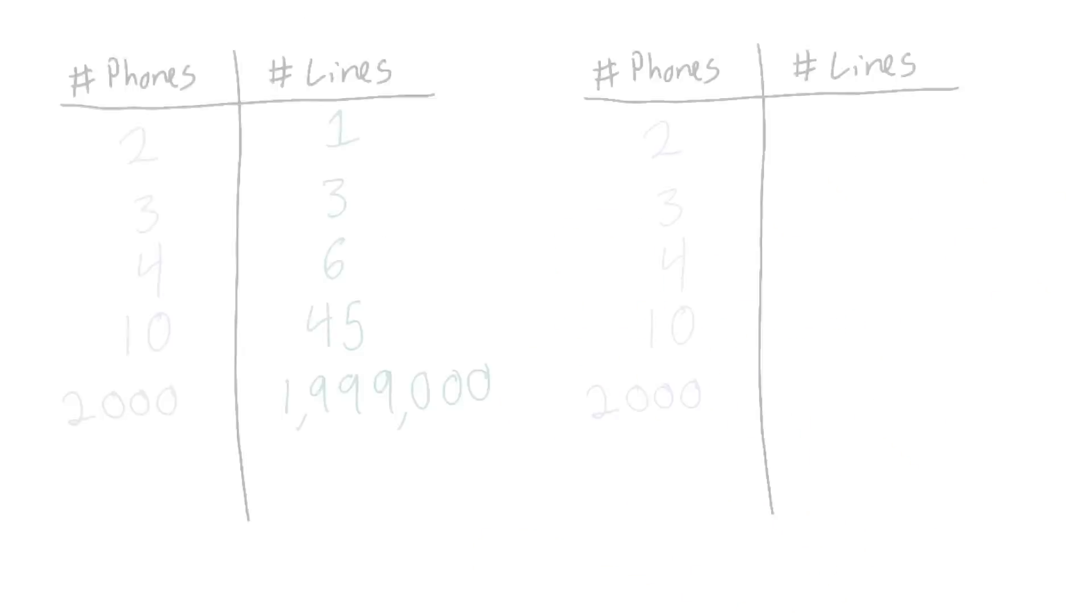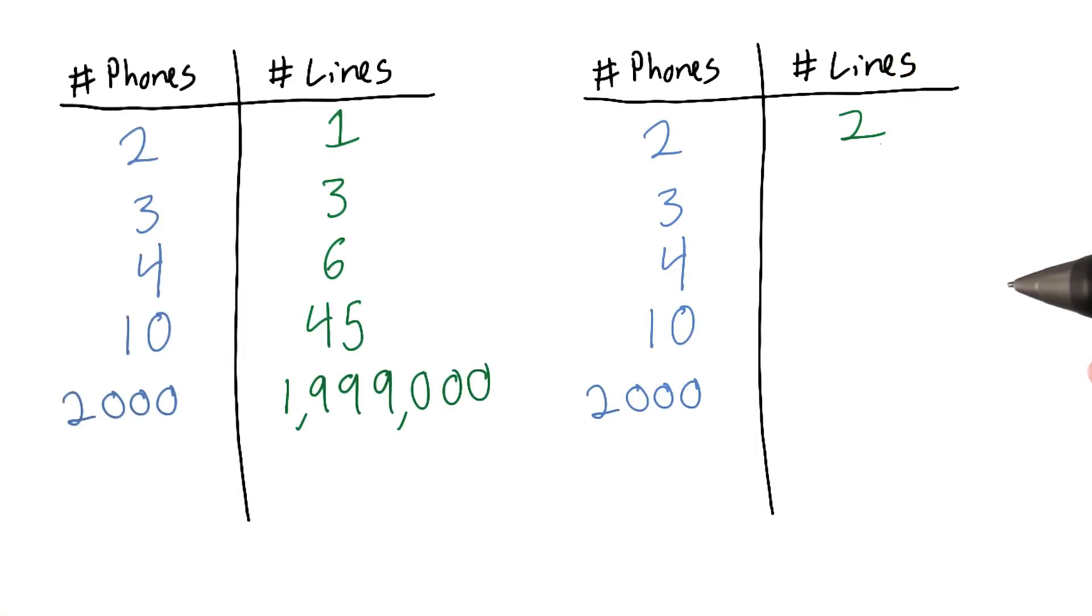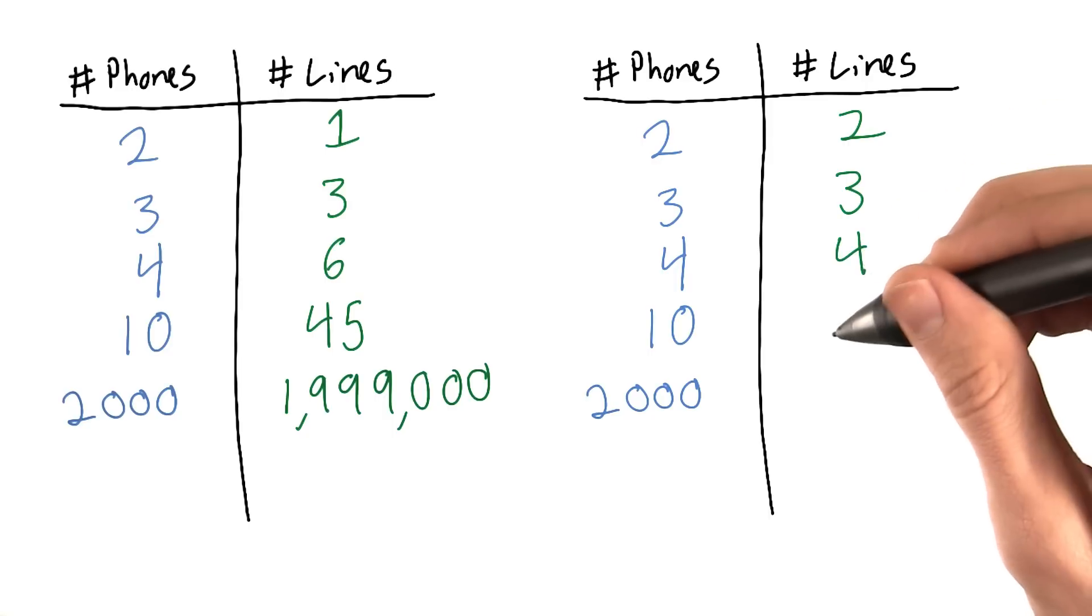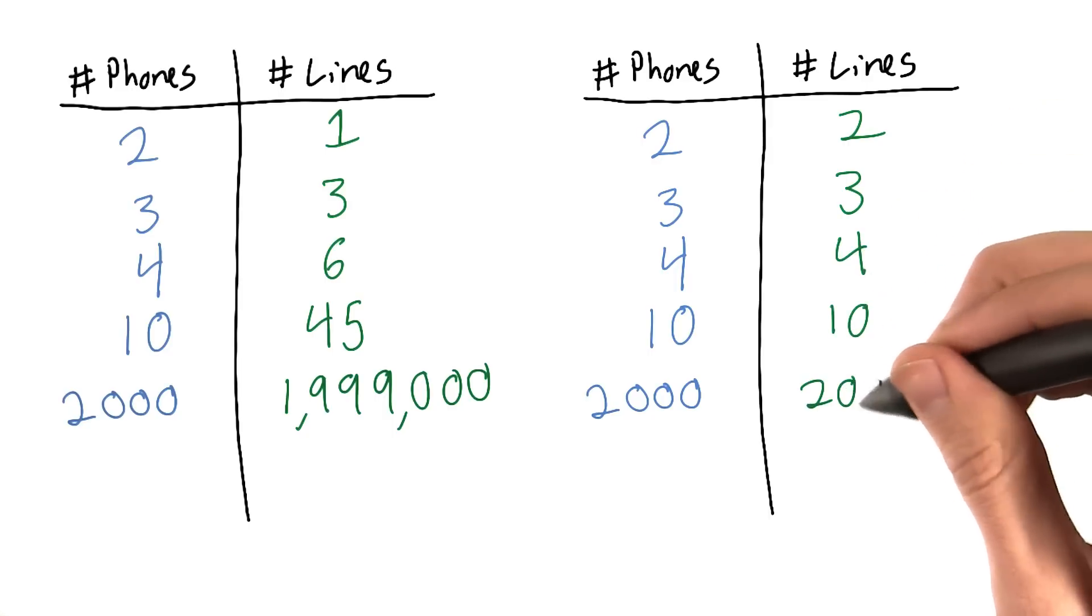Let's take a look at our chart again. If we have 2 phones, our number of connections will be 2. If we have 3 phones, our number of connections will be 3. 4 phones will be 4, 10 will be 10, and 2,000 will be 2,000.